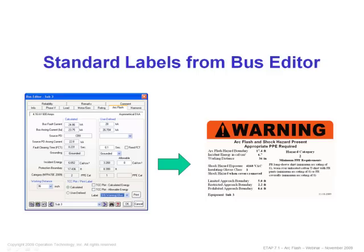Standard labels can be created from the bus editor. By going onto your one-line diagram and double-clicking on a bus, you can navigate to the ArcFlash page. From there, there's a section called TCC Plot slash Print Label. There will be a drop-down menu on the bottom right-hand corner, which will indicate the size and the template you'd wish to print. To the left of that feature, there are two radio buttons, one for Calculated and one for User Defined. Please note, when selecting Calculated, the results listed in the Calculated section of this window will be printed on the label, and vice versa, if the User Defined radio button is selected, then the User Defined results will be printed onto the label.